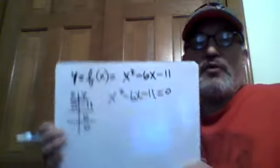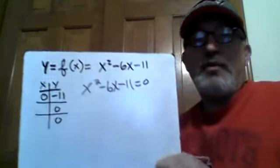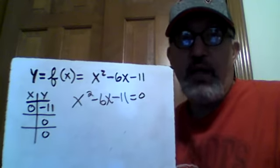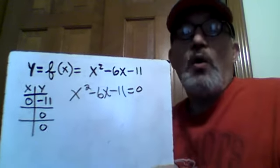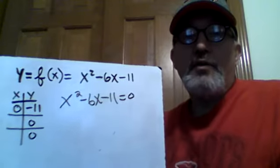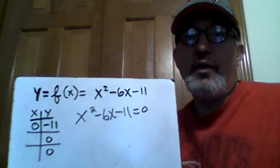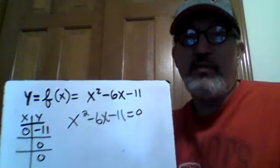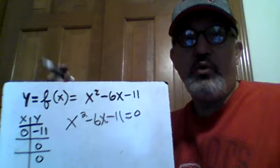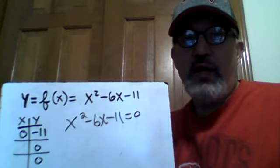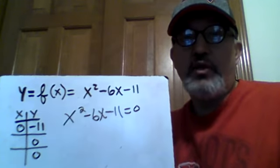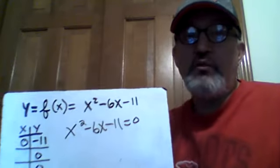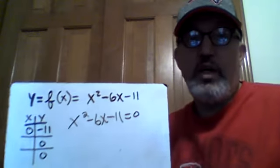Since we can't factor, we're left with the two other methods: either completing the square or the quadratic formula, which are in fact the same. We'll do both, and then we're going to do what we did in the video about x squared minus 10x minus 11 — take our two roots, our two values of x that make the function equal to zero, plug those in for x in the original function, and confirm that we do get zero.